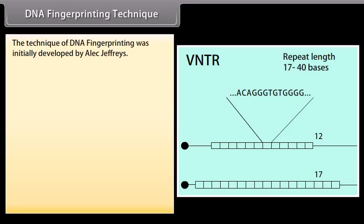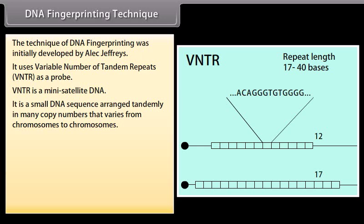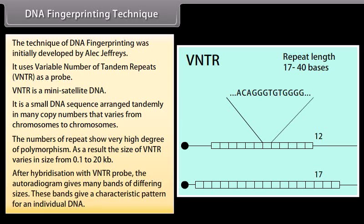The technique of DNA fingerprinting was initially developed by Alec Jeffreys. It uses variable number of tandem repeats (VNTR) as a probe. VNTR is a mini satellite DNA — a small DNA sequence arranged tandemly in many copy numbers that varies from chromosome to chromosome. The number of repeats shows a very high degree of polymorphism, and as a result the size of VNTR varies from 0.1 to 20 KB. After hybridization with the VNTR probe, the autoradiogram gives many bands of differing sizes, which give a characteristic pattern for an individual's DNA.